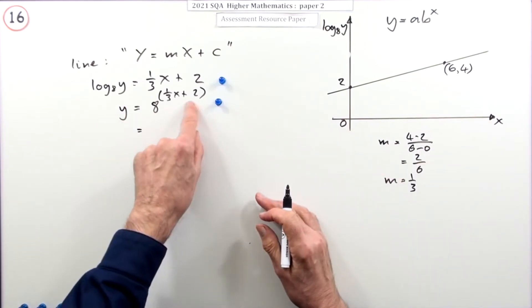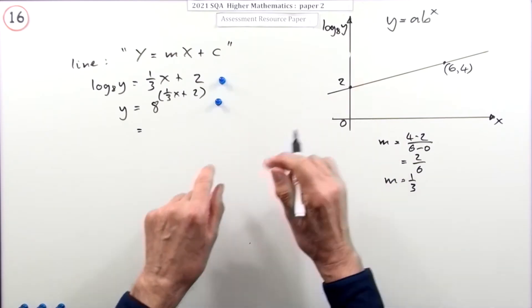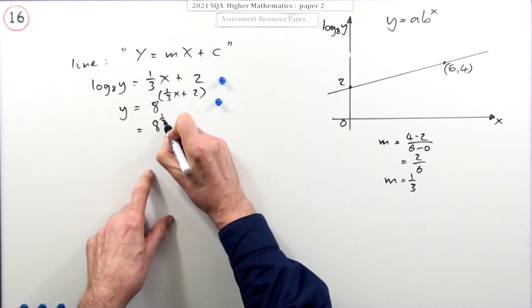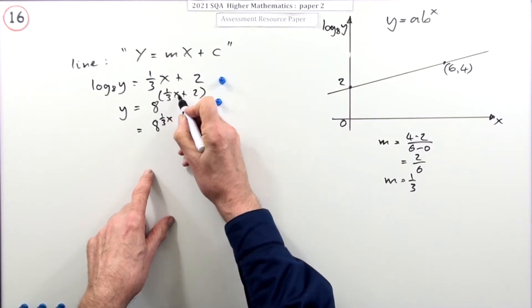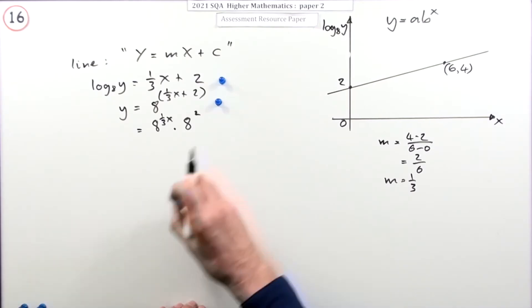Now, that was just a case of split this lot up. So, here, instead of using laws of logs, you're using the laws of indices. If you're multiplying terms, you add the powers. So, if you've added the powers, you must have multiplied the terms. So, that would be eight to the third X times eight to the two. That's worth a mark.